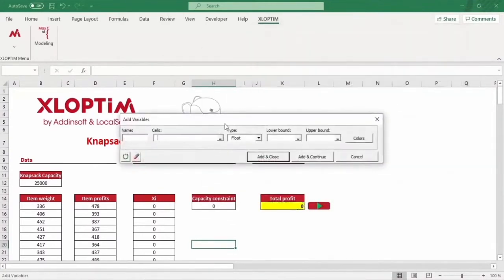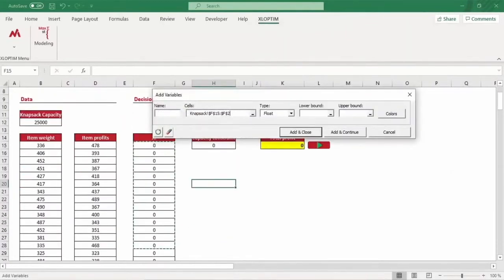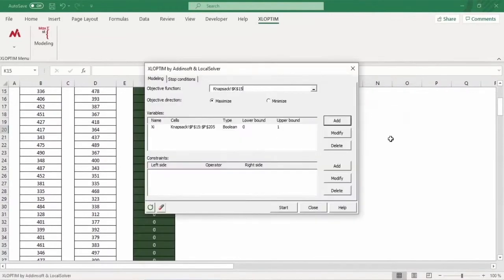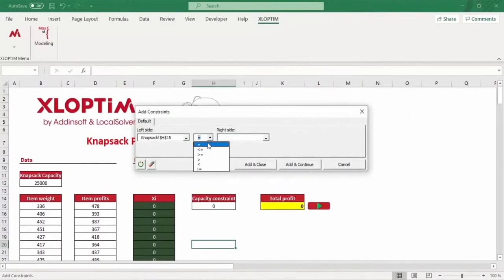Excel OptiM stands out for its computing power by integrating Local Solver, the world's leading optimization solver, combining exact, such as branch and bound, and heuristic, such as local and global search techniques. As a result, all the most in-depth optimization techniques are implemented so that you can make better decisions.